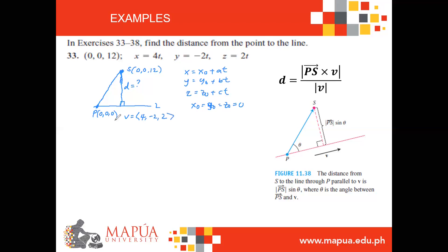We can now find the distance by computing the cross product of vectors PS and v, then taking its magnitude over the magnitude of v. Vector PS is found using P as the initial point and S as the terminal point: (0 − 0, 0 − 0, 12 − 0) = (0, 0, 12).